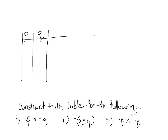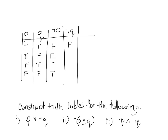Now we can practice. The first two columns are always the same: true-true, true-false, false-true, false-false. Since there are a bunch of not P's and not Q's needed, let's get columns for those. Not P is the opposite of P: false, false, true, true. And not Q is the opposite of Q: false, true, false, true.